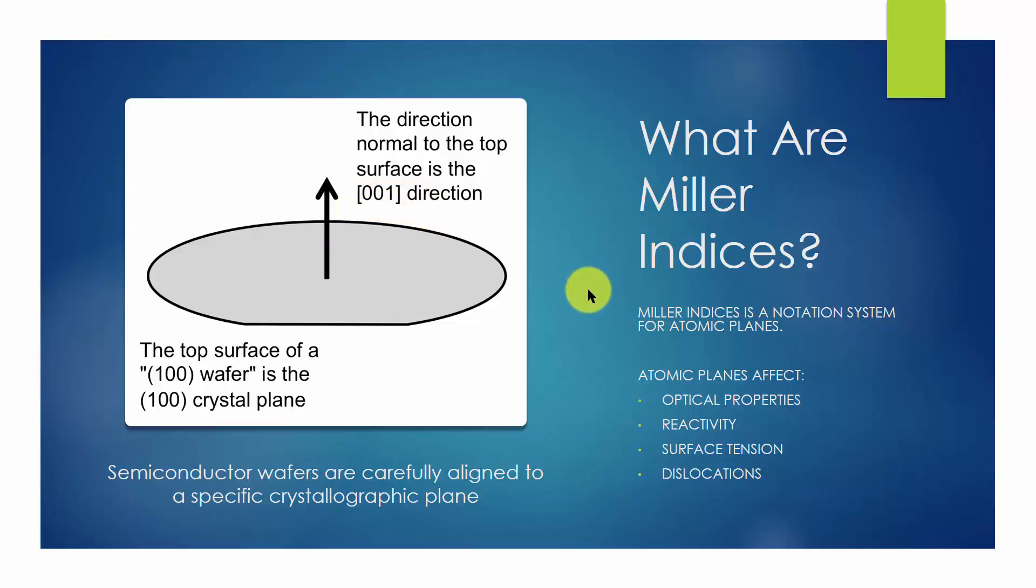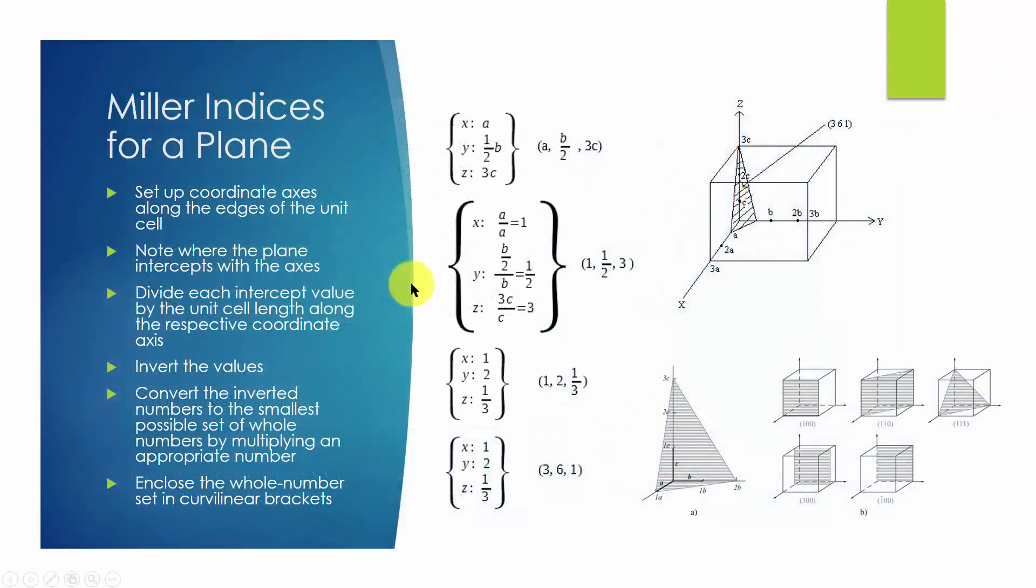How do we get these Miller indices numbers? Here is a procedure for a crystallographic plane. In the next slide, we will talk about the procedure for a direction.